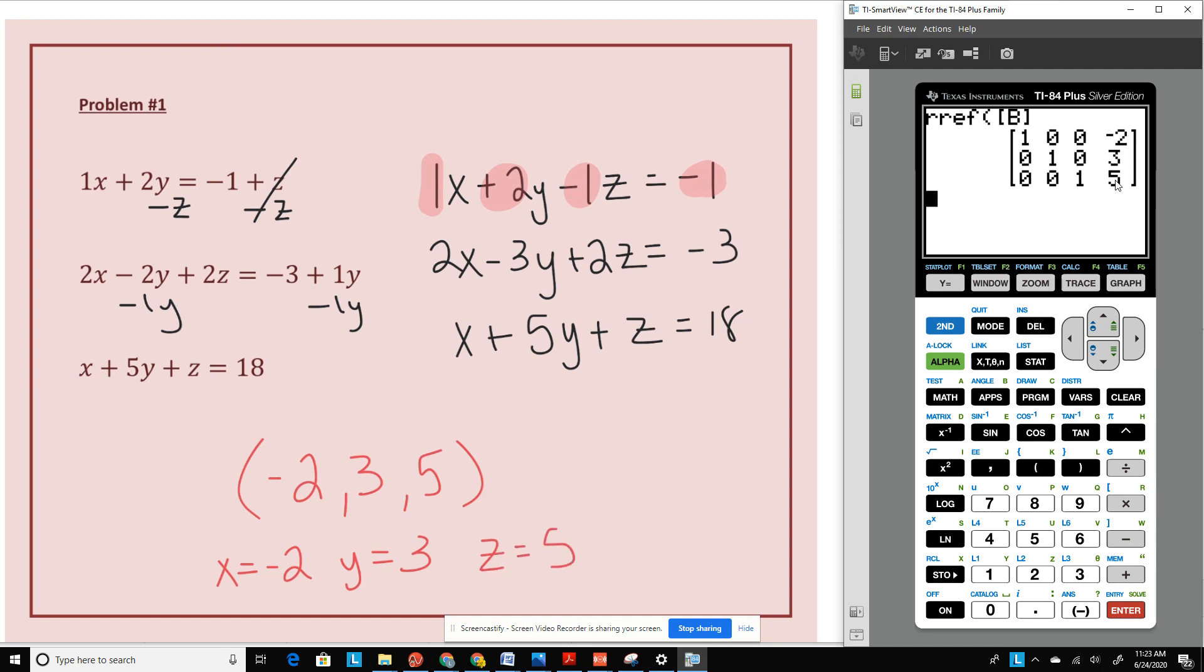Again, because we saw those ones going diagonally straight down, this is called consistent and independent. And that references it has one solution.